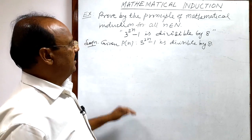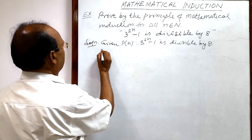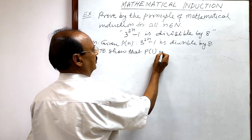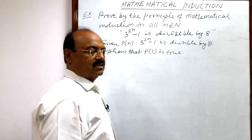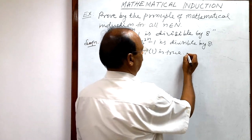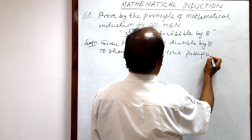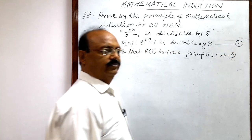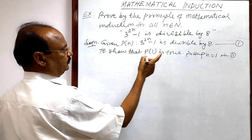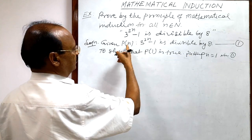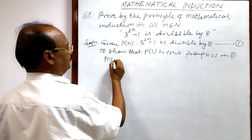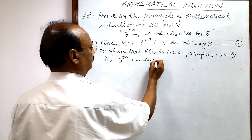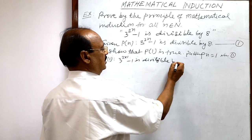Step number 1: we have to show that P(1) is true. For this, we will put n equal to 1. Putting n equal to 1, we get P(1) equal to 3 to the power 2 into 1 minus 1 is divisible by 8.